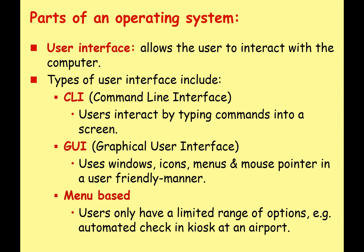One of the key features an operating system must provide is a user interface — this allows the user to interface with the computer, giving information both ways. There are traditionally three main types: the command line interface, where the user interacts by typing commands; the graphical user interface (GUI), which uses windows, icons, menus, and pointers in a user-friendly, visually attractive manner; and a menu-based system, where users have only a limited range of options — for example, the ATM at your bank or an automated check-in kiosk at an airport.